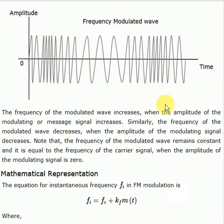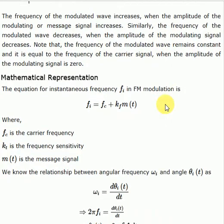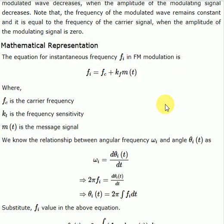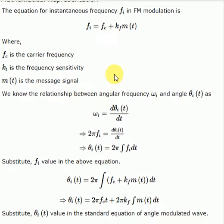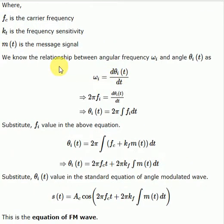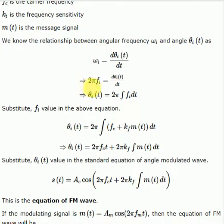The mathematical representation: f_i = f_c + k_f m(t), where k_f is the frequency sensitivity. We know the relationship between ω_i and θ_i is dθ_i/dt, so ω_i = 2π f_i = dθ_i/dt. Then θ_i = 2π integral of f_i dt.